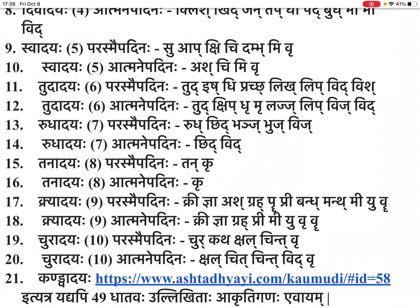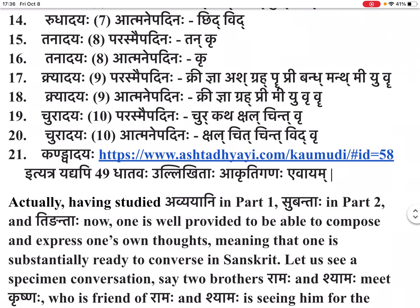This is at https://www.ashtadyahi.com/kaumudi/crossroads/id=58. At this web page, yadhyapi — even if — 49 dhatavaha are mentioned, akruti ghanaha eva ayam — this is only an indicative list. 49 is not the complete list. The list of 49 listed there is only indicative. There can be many more.